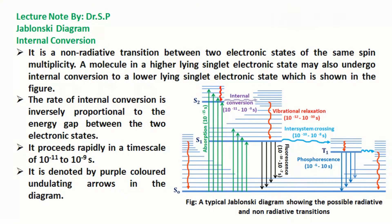Internal conversion is a non-radiative transition between two electronic states of the same spin multiplicity. A molecule in a higher lying singlet electronic state may undergo internal conversion to a lower lying singlet electronic state, as shown in the figure. The rate of internal conversion is inversely proportional to the energy gap between the two electronic states. It proceeds rapidly on a timescale of 10 to the power minus 11 to 10 to the power minus 9 seconds and is denoted by purple colored undulating arrows in the diagram.